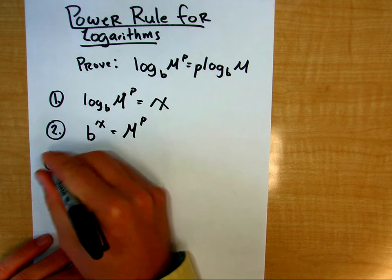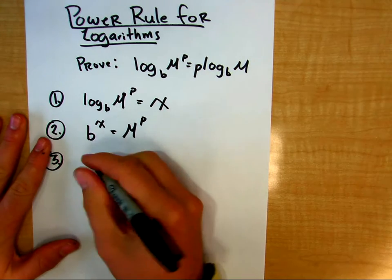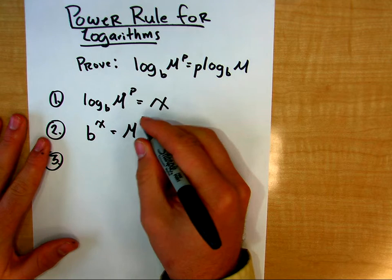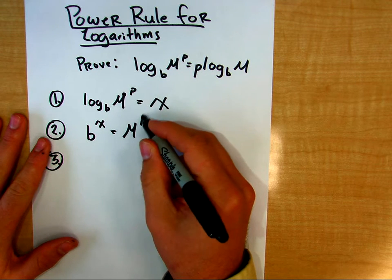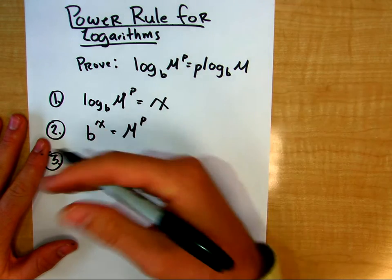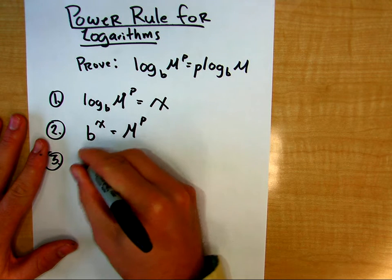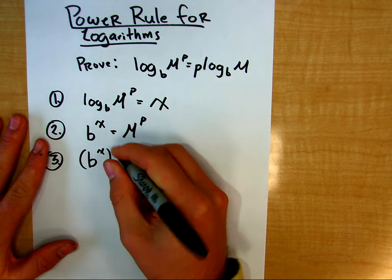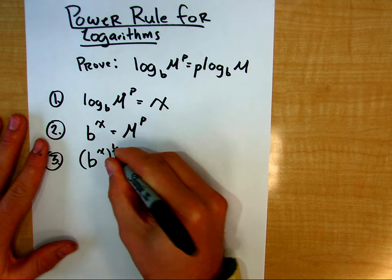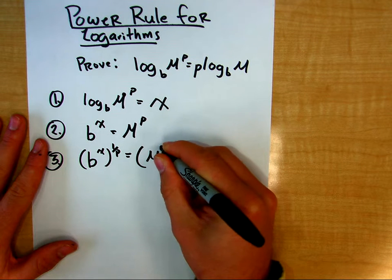The third thing I want to do is, what would happen if I got rid of this exponent p here and I'd like to make it a 1, so I'll raise both sides to the 1 over p power. Remember, whatever you have to do to one side, you do to the other.